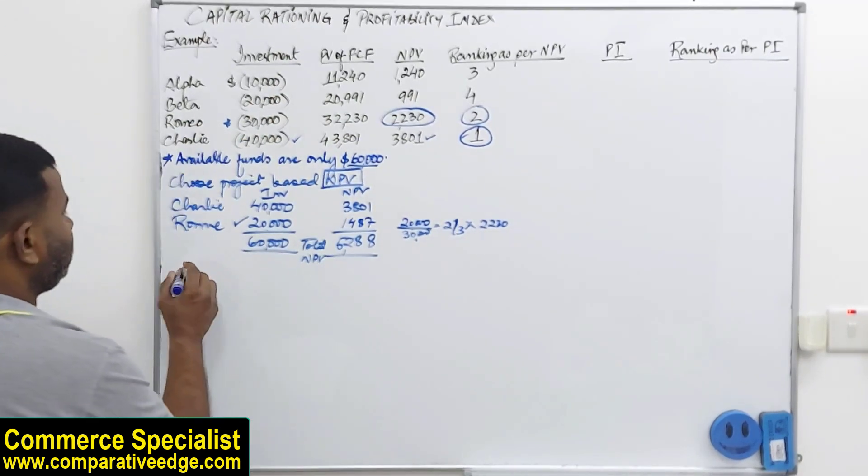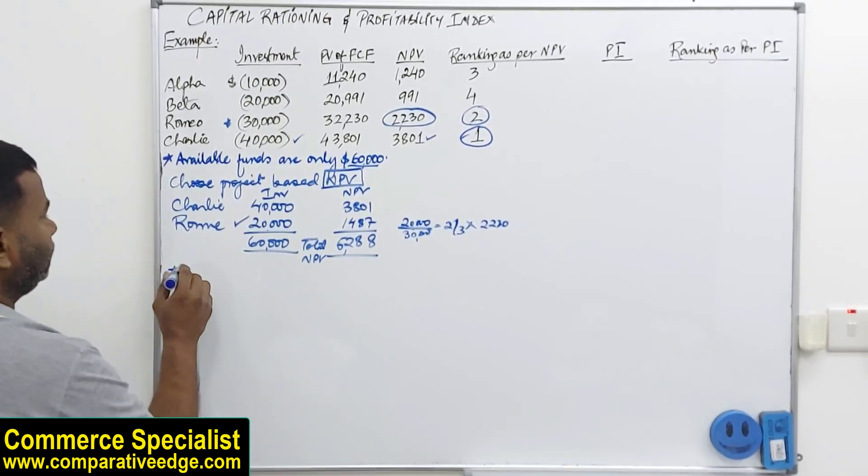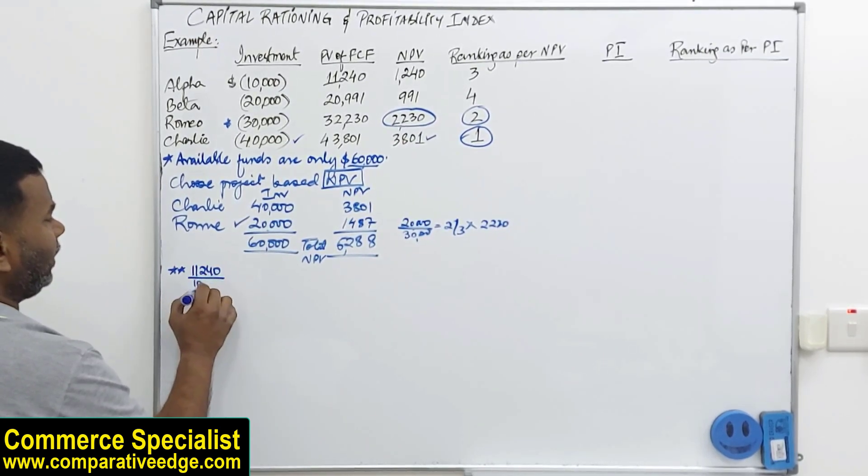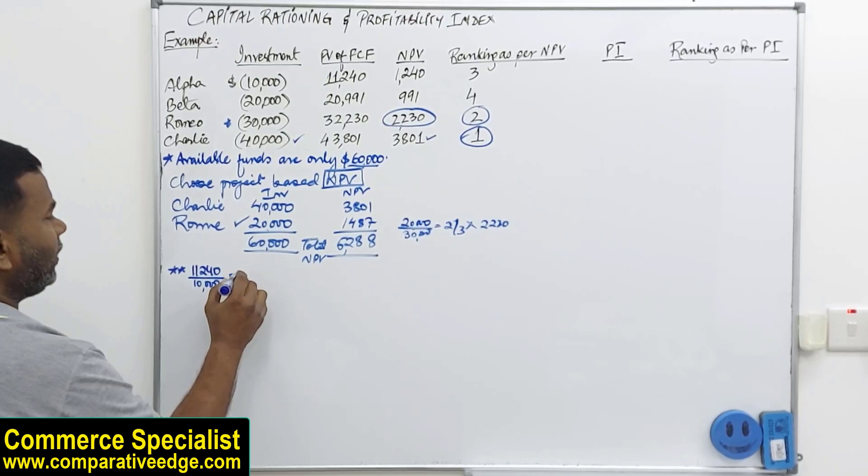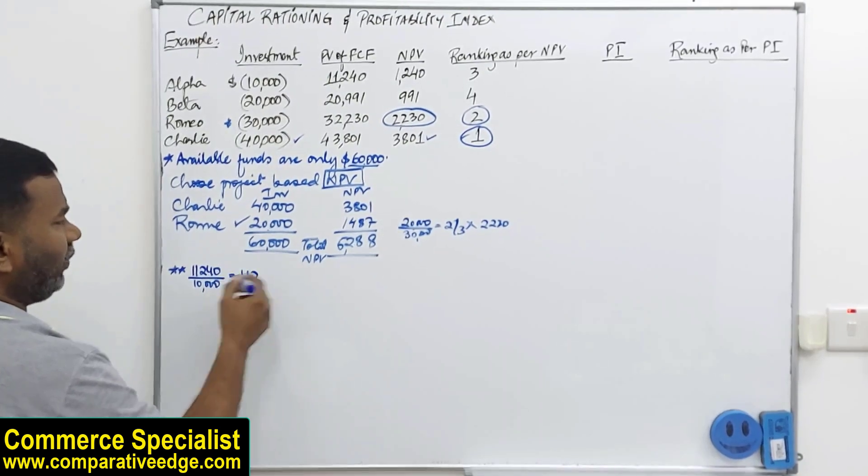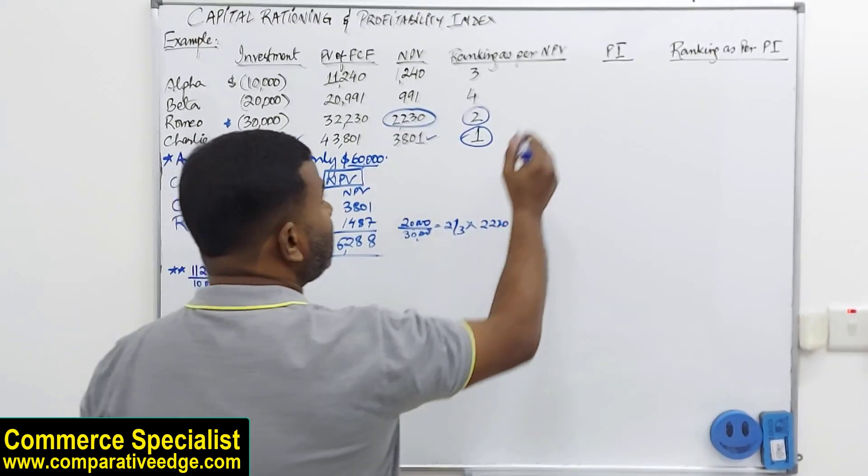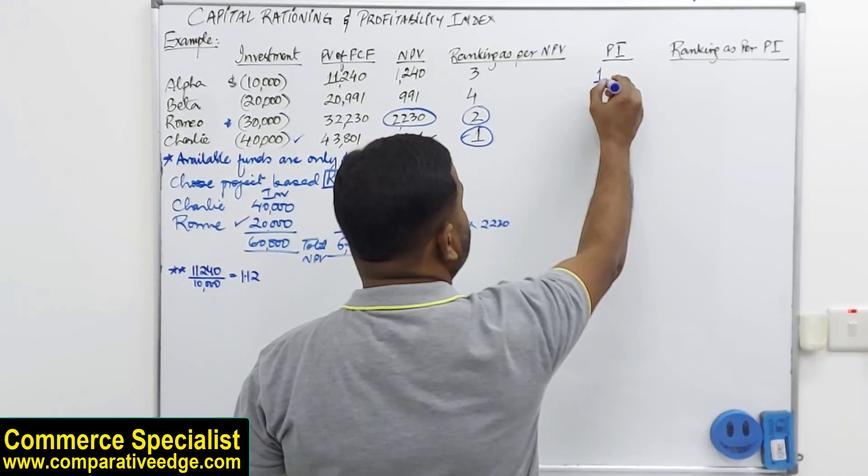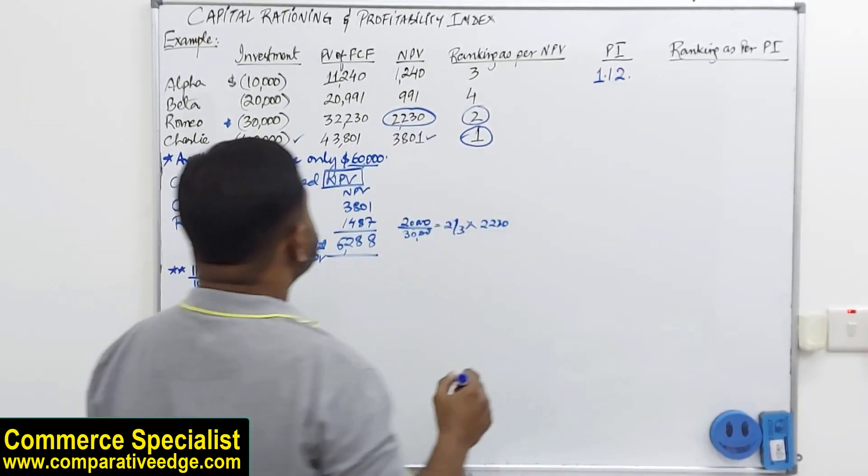I am just showing it here. 11,240 divided by 10,000. So this will give me 1.12 if I take two decimal places. Profitability index is coming to 1.12.